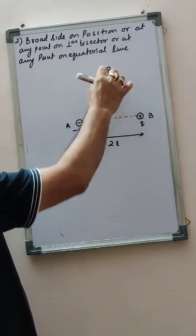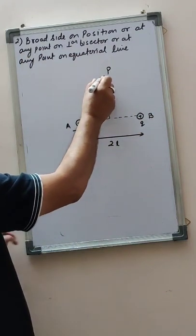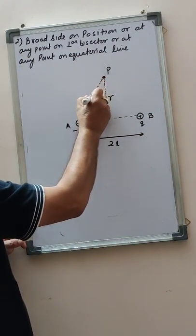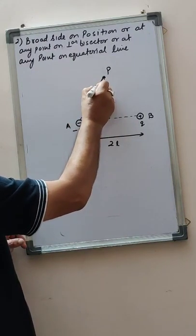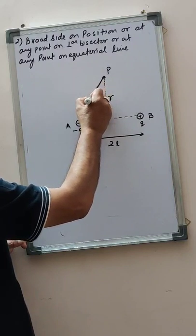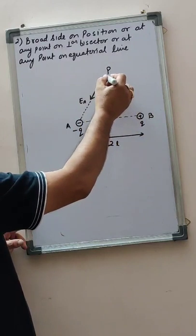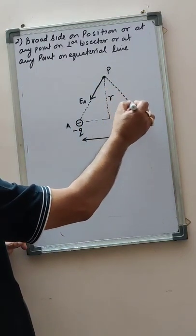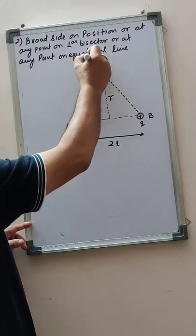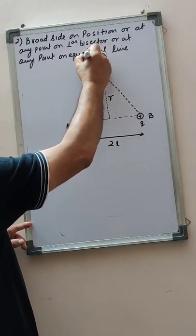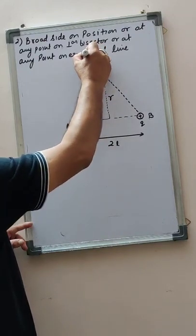The negative charge will produce a field as well as the positive charge will produce a field. The electric field due to the negative charge is towards the charge, so it will be directed in this way — this is your Ea. The electric field due to the positive charge is away from the charge along the line joining, so this is your Eb.